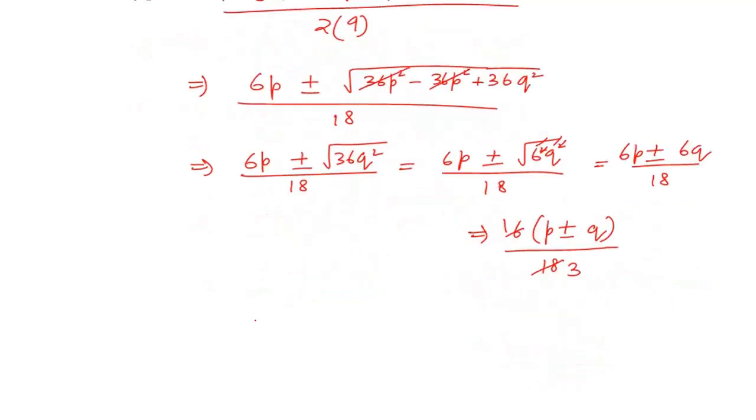These are your two values of x. One can be written as (p + q)/3 and the other can be written as (p - q)/3. These are the two values of x and this is your solution for this question. Now moving to the next one.